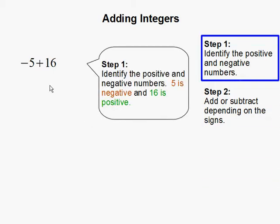Step 1: Identify the positive and negative numbers. 5 is our negative number since it has a negative sign in the front, and 16 is our positive number.